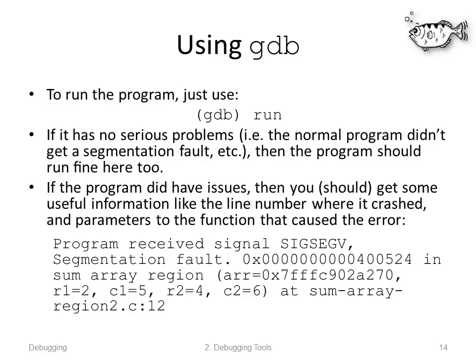To run your program from within GDB, when you've got the GDB prompt type 'run'. If your program has no serious problems — no bugs — then it should run fine; the debugger shouldn't introduce bugs. If your program does have issues, you should get some useful information like the line number where it crashed and parameters to the function that caused the error. For example: 'Program received SIGSEGV: segmentation fault.' That really helps a lot.